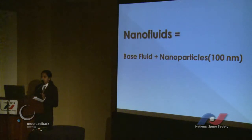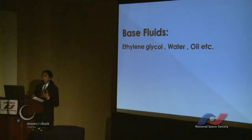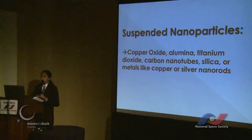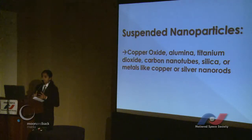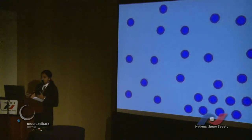Nanofluids are nothing but an enhancement of coolant fluids. The base fluids are embedded with nanoparticles being suspended in them. It has two things: base fluids and nanoparticles. The base fluids being ethylene glycol, water, oil, or any other substance which can absorb heat. Along with that, we have particles of around 100 nanometer size — like copper oxide, aluminium, titanium, or silver nanorods or nanoparticles of any shape — suspended in it. These things enhance the properties of the base fluids. You can see the nanoparticles being suspended in the base fluid in this picture. The base fluids are already very efficient coolants, but suspending these nanoparticles makes them even better.